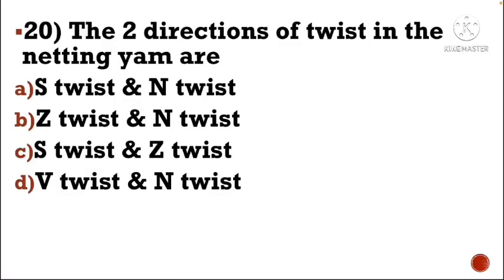Next question: The two directions of twist in the knitting yarn are — Option A: S-twist and N-twist, Option B: Z-twist and N-twist, Option C: S-twist and Z-twist, Option D: V-twist and N-twist.